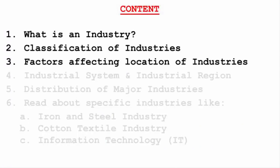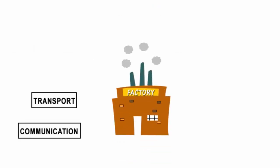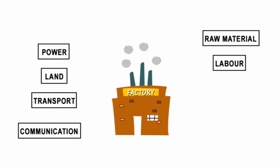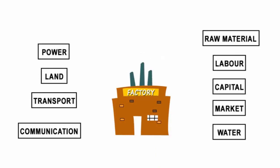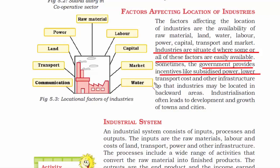Now we'll read about factors that affect the location of industries: communication, transport, land, power, raw material, labor, capital, market, and water. If you see all the industries in India, you'll see all these factors are easily available nearby. Or if some industry is affected by lack of any of these factors, then the government of India steps in and helps them by giving incentives like subsidized power — providing power at lower rates — lower transportation cost, and other economic favors. The reason the government helps is because industrialization often leads to development and growth of towns and cities.